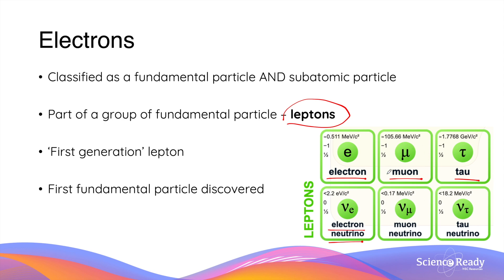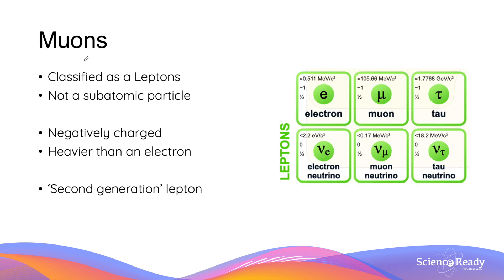Second-generation leptons are much rarer and heavier than the first generation. The third-generation leptons — the tau and the tau neutrino — are so rare that when we see them, they decay very quickly into second- and first-generation leptons. The muon is classified as a lepton, however it is not a subatomic particle as it is not found in the atom.